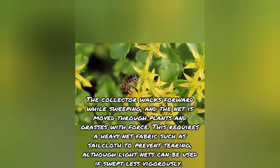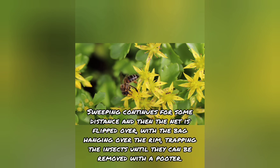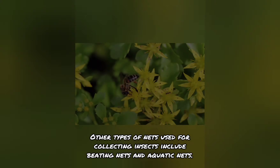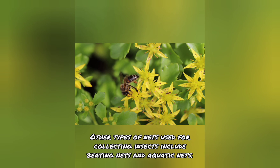This requires a heavy net fabric such as sail cloth to prevent tearing, although light nets can be used if swept less vigorously. Sweeping continues for some distance, and then the net is flipped over with the bag hanging over the rim, trapping the insects until they can be removed with a pooter. Other types of nets used for collecting insects include beading nets and aquatic nets.